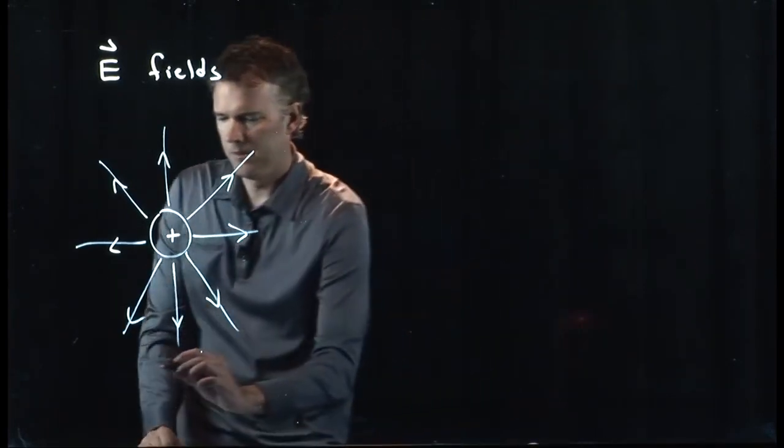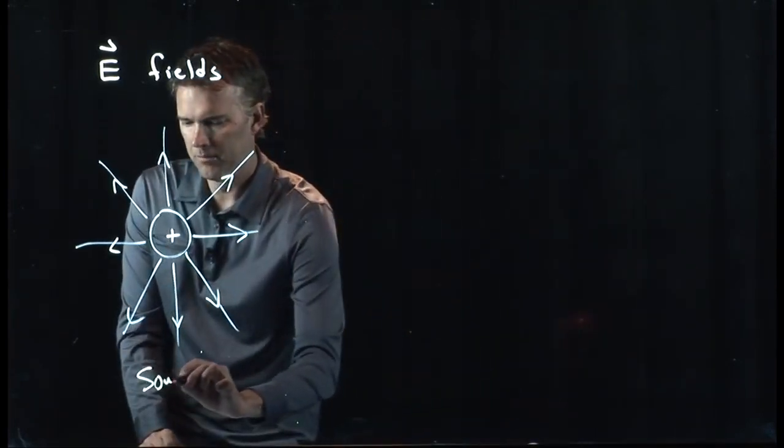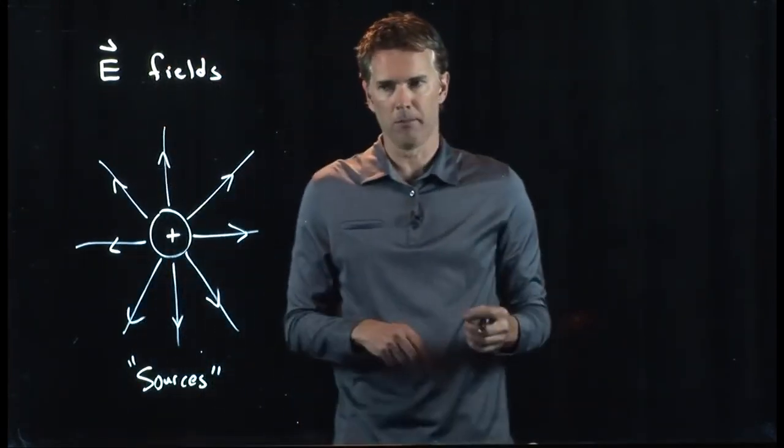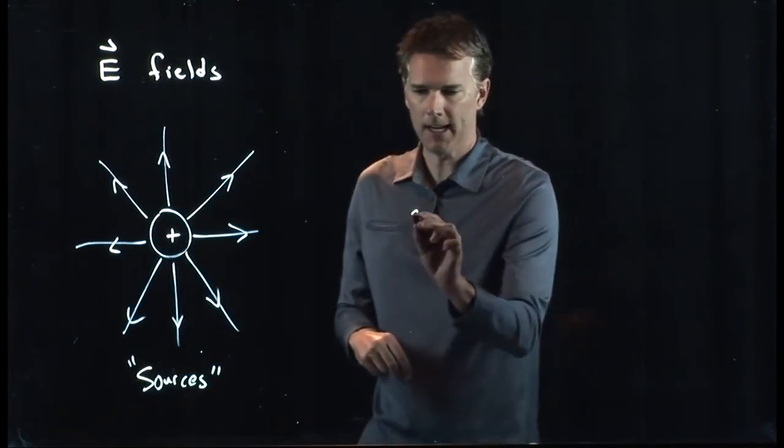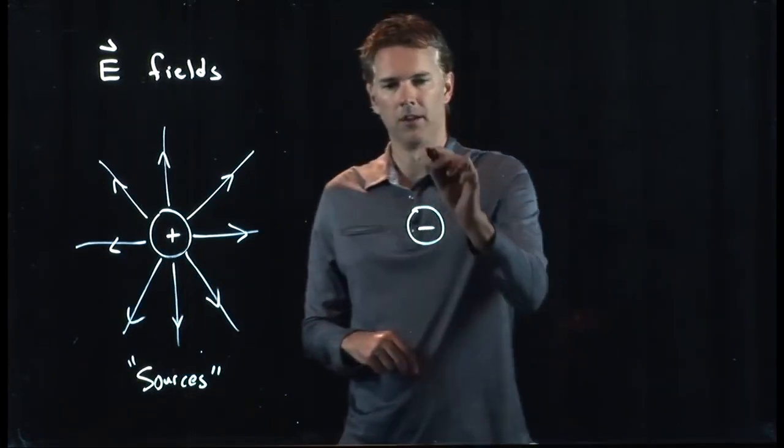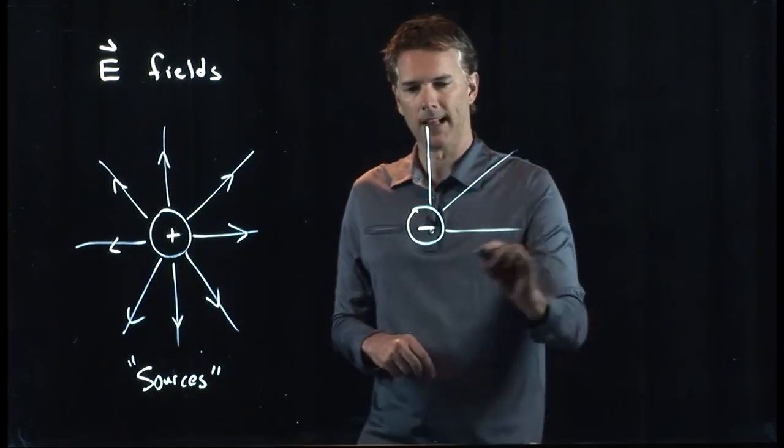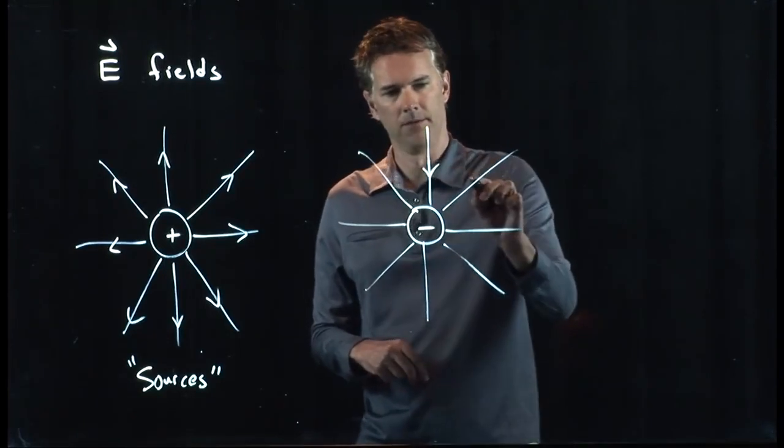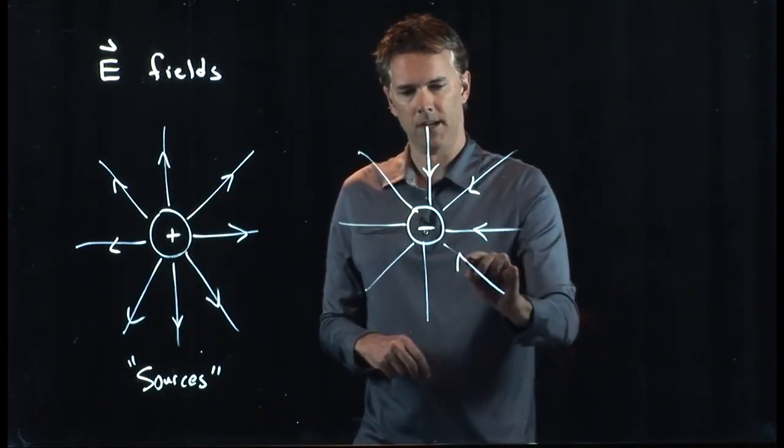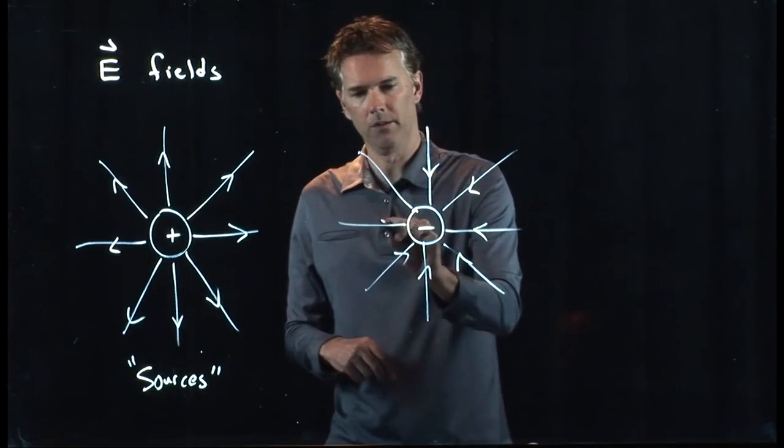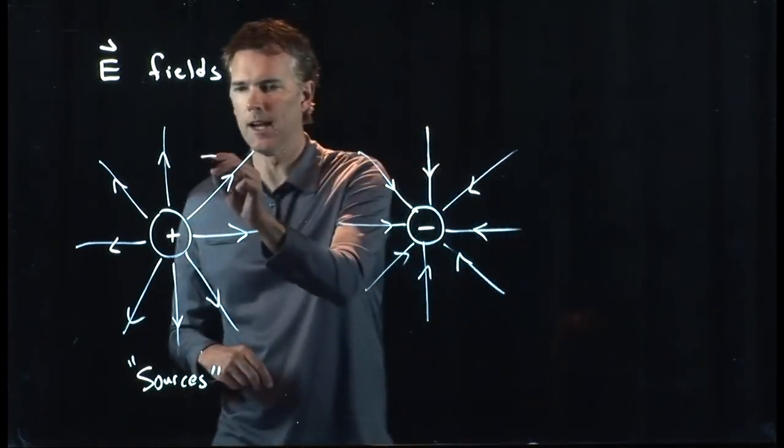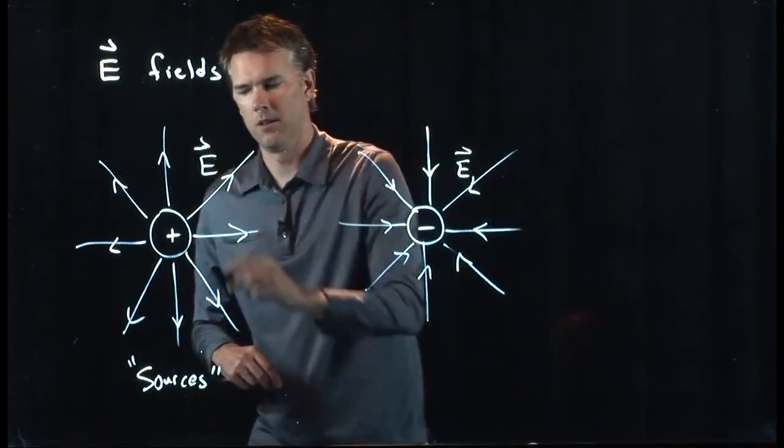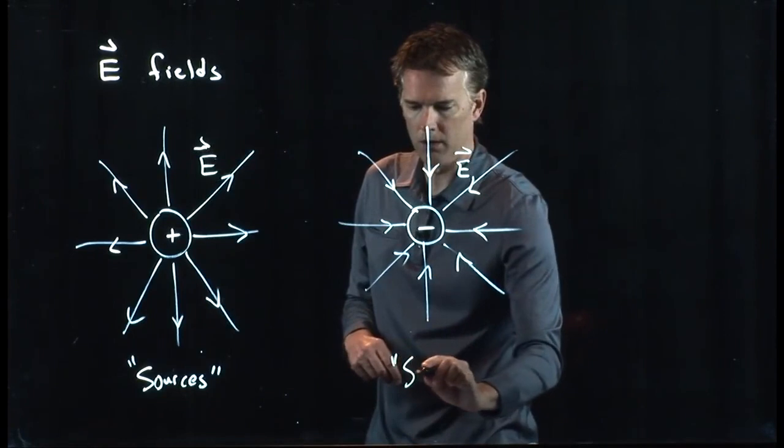Positive charges, we call sources. Electric field lines come out from positive charges. Negative charges are called sinks. The lines look exactly the same, but what changes is the direction of the arrow. It's now pointing towards the negative charge. And those field lines end on the negative charge. Those we call sinks.